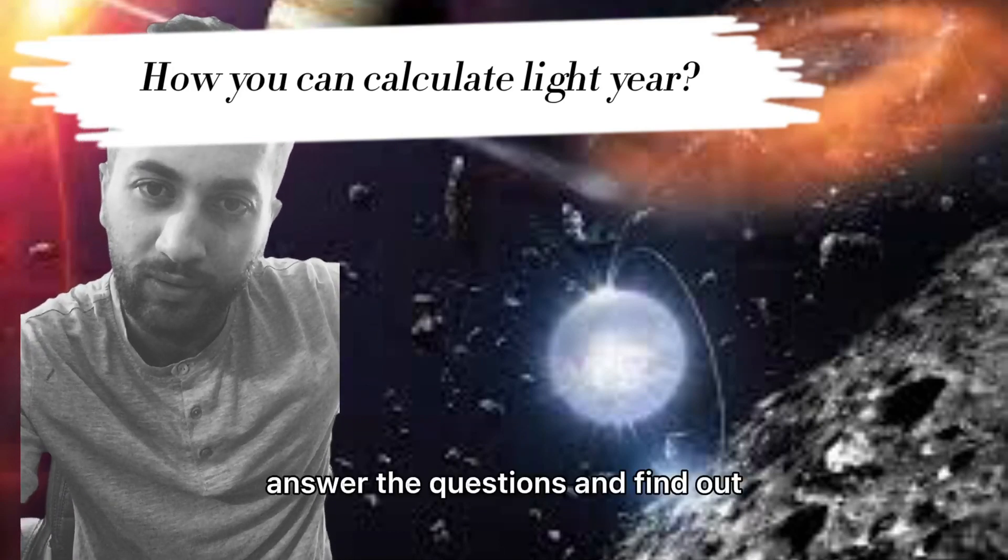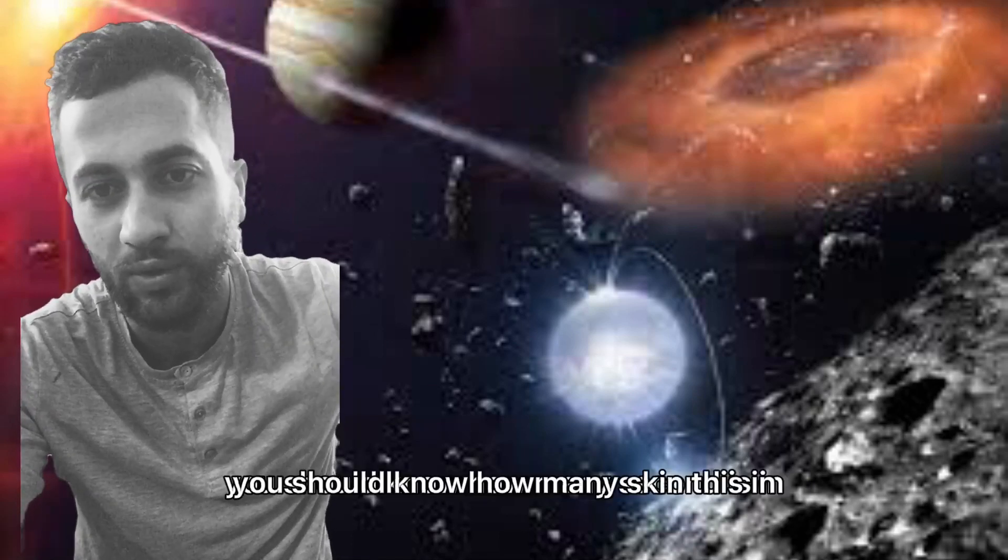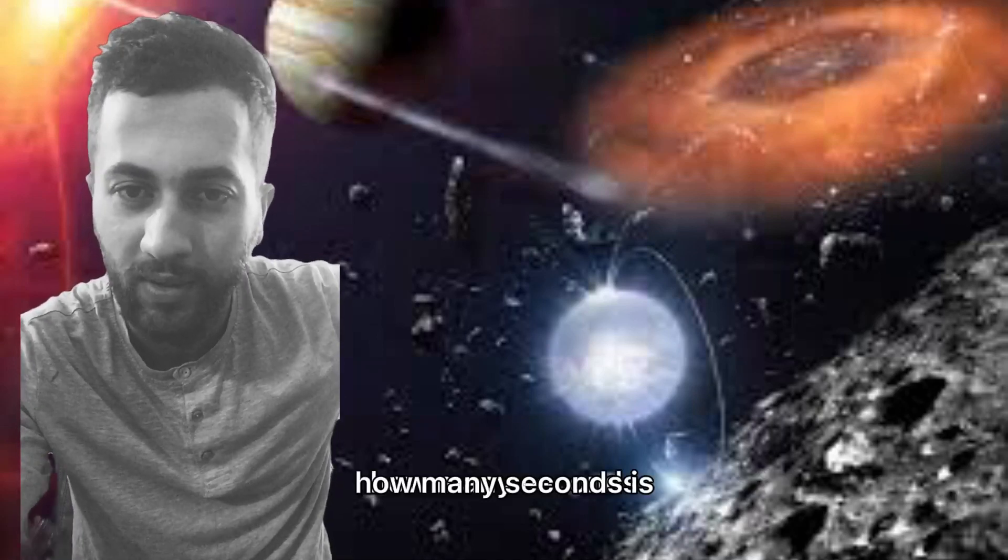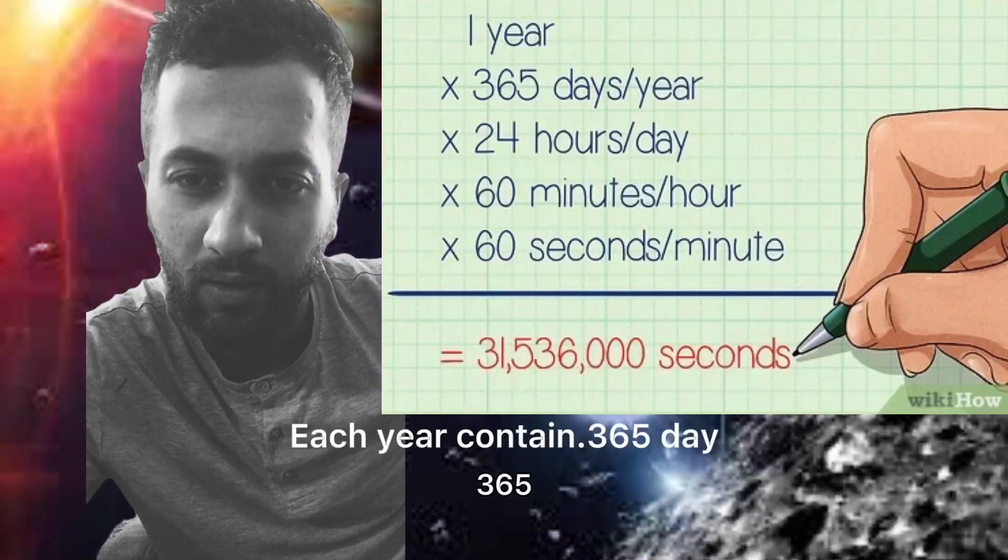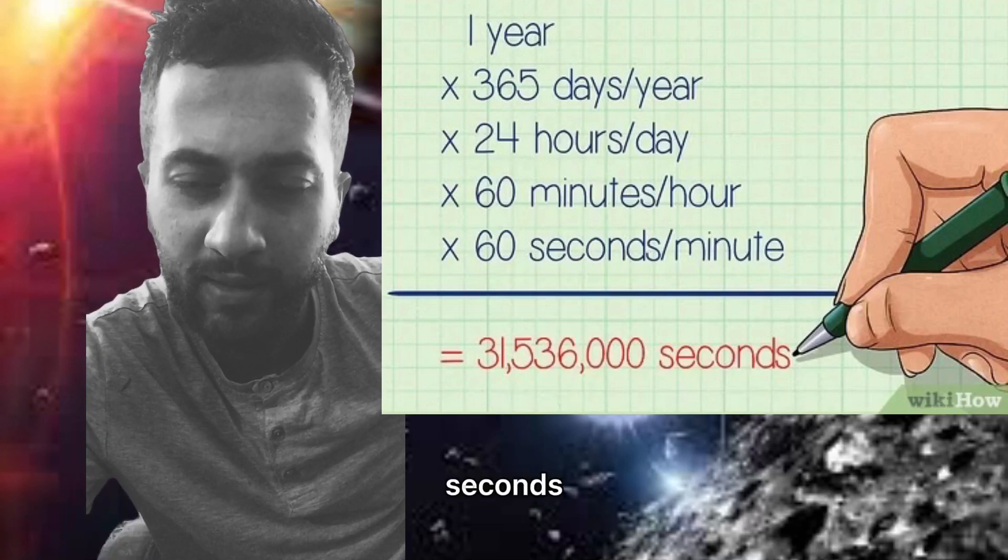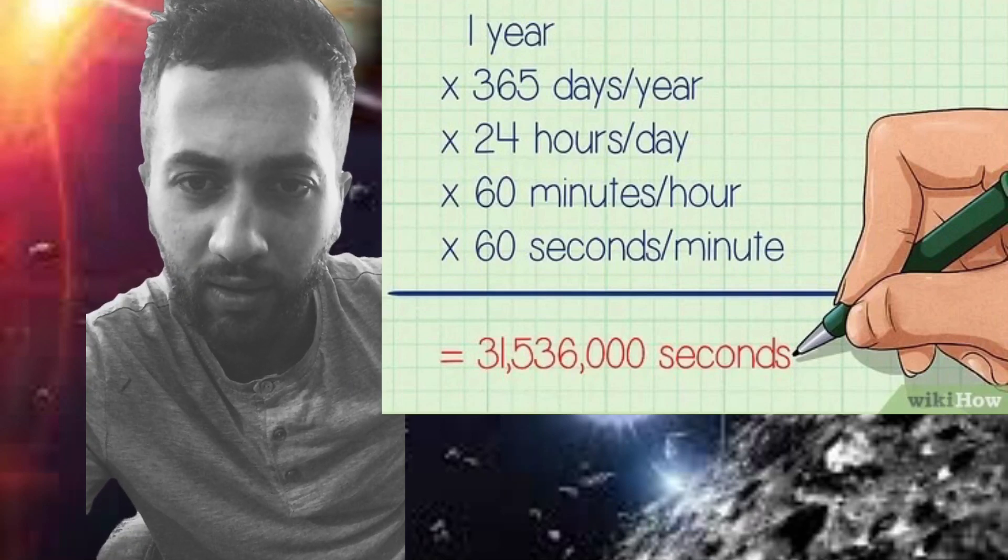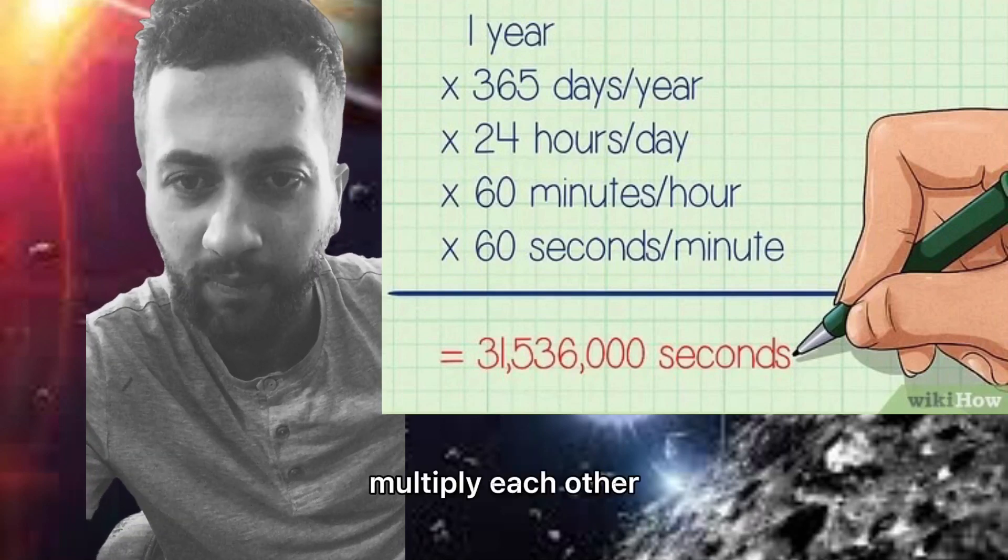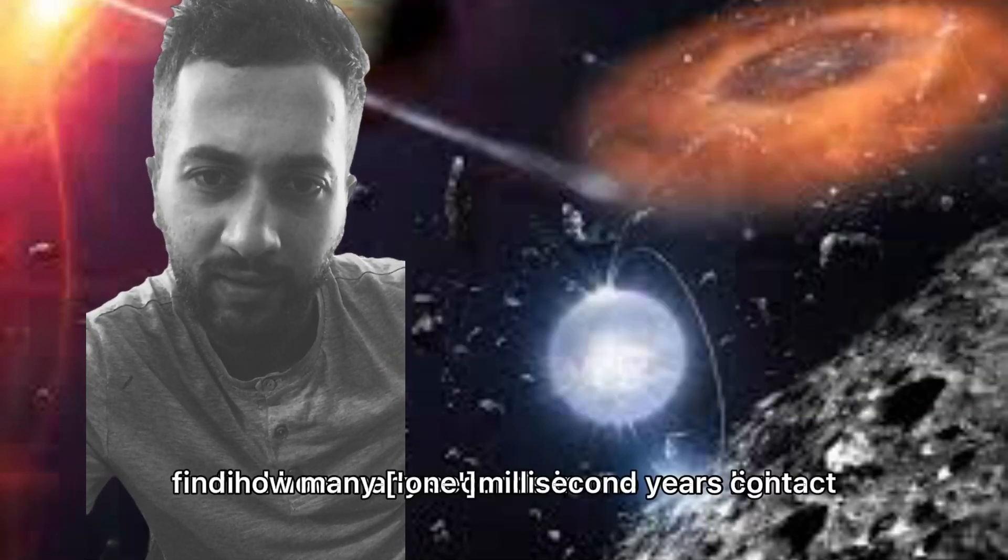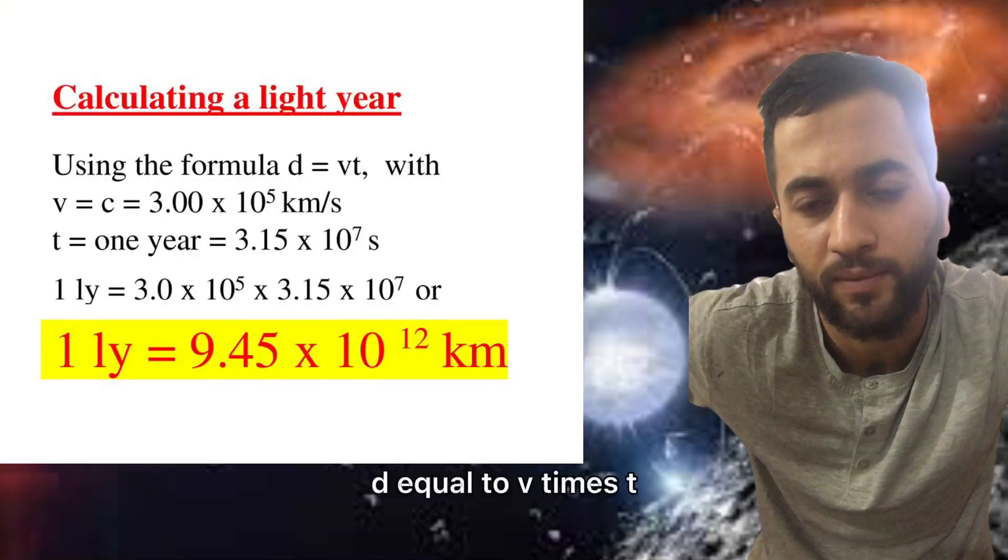You should know how many seconds in one year. How many seconds? 365 days, 60 minutes, 60 seconds, 24 hours. By timing each other, multiply each other, you can find how many seconds one year contains.